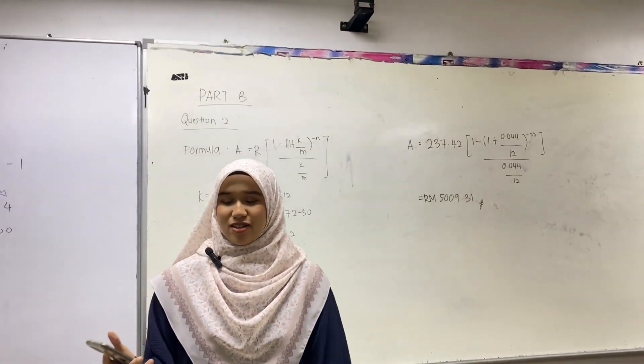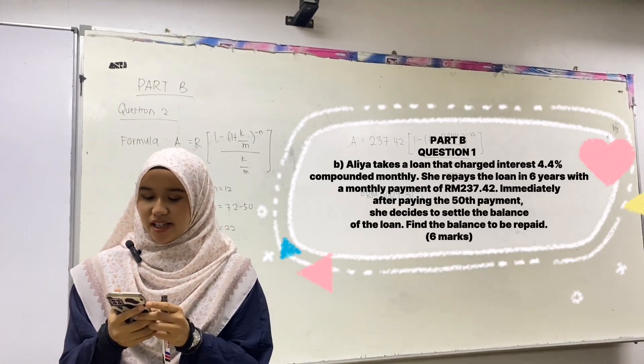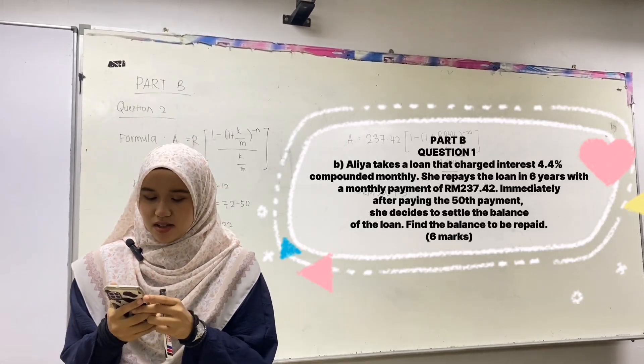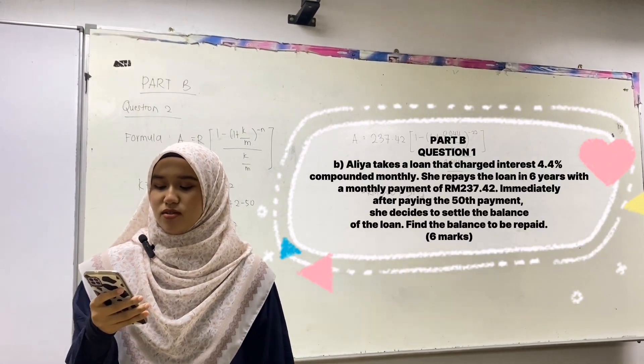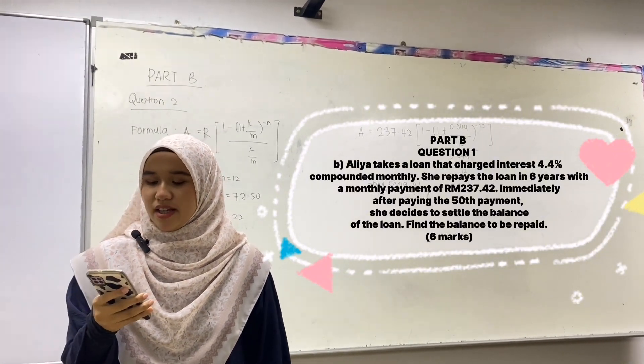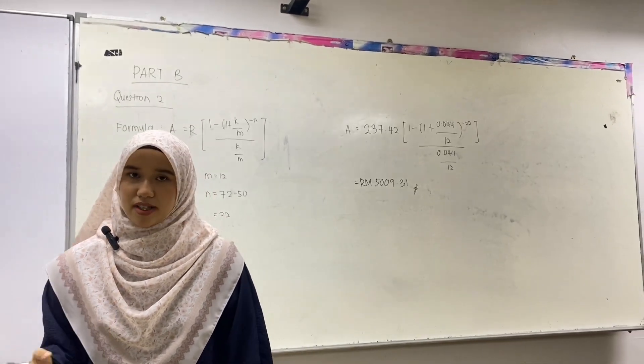Let's go to Part B question 1B. Alia takes a loan that charges interest 4.4% compounded monthly. She repaid the loan in 6 years with a monthly payment of RM237.42. Immediately after paying the 15th payment, she decides to settle the balance of the loan. Find the balance to be repaid.